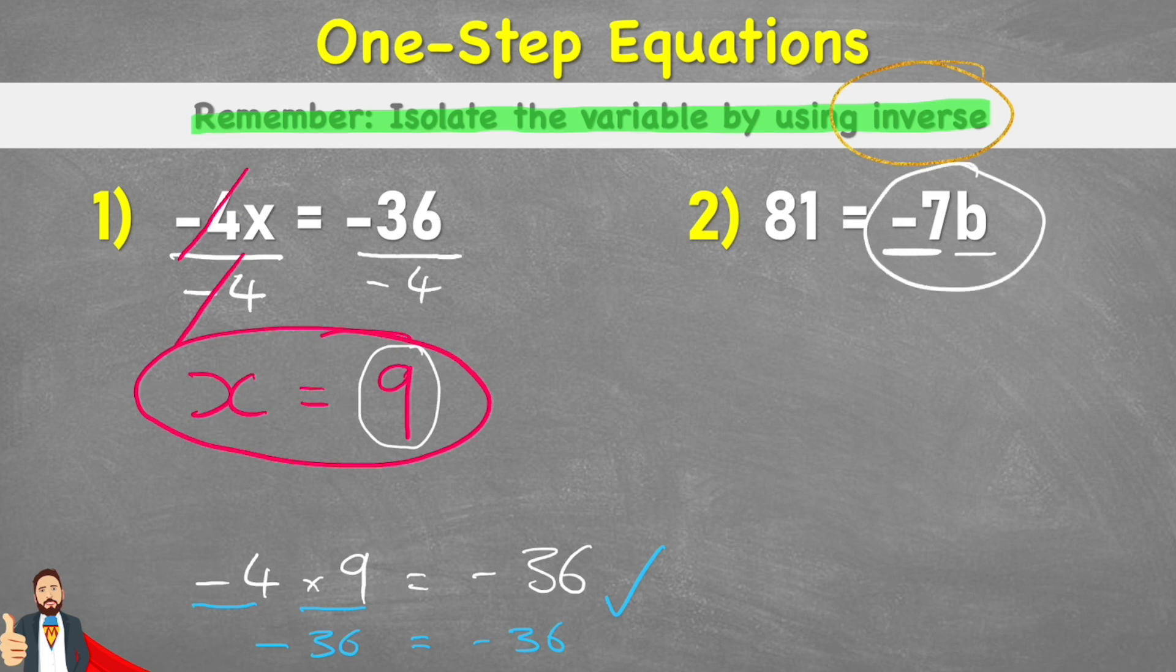And remember, this negative 7b means negative 7 times b. So how do I get rid of a times negative 7? Well, that's right. I'd have to divide by negative 7 as well. But remember, that means that this side is now imbalanced. So I must now put a divide by negative 7 on the other side too. Now I can begin to solve.